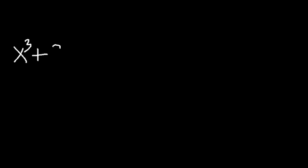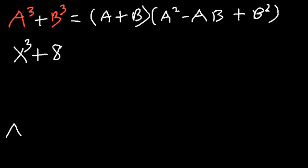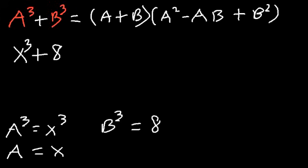In this video we're going to focus on factoring sums and differences of cubes. To factor x³ + 8, there is a formula: a³ + b³ = (a + b)(a² - ab + b²). Here, a³ = x³ so a = x, and b³ = 8 so the cube root of 8 is 2, meaning b = 2. Now we just plug everything into the formula.